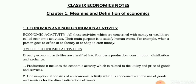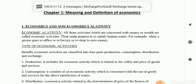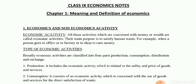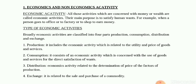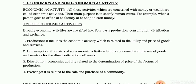For example, a person goes to office, a labor or worker goes to factory, a shopkeeper goes to shop — these are the different activities performed in an economy to earn money and wealth, and are simply known as economic activity. Broadly, economic activities are classified into four parts: production, consumption, distribution, and exchange.